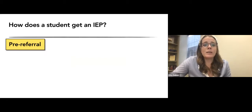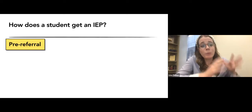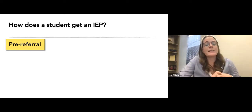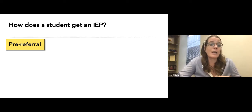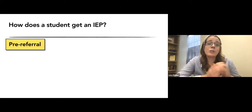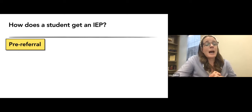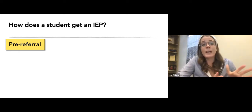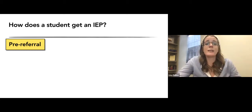So how does a child get an IEP? It starts in pre-referral. Some schools have a pre-referral process and some do not. If you're a general educator, this is the part you really need to understand, because a lot of that is going to fall on your shoulders — it all happens before we even refer the child to special ed.